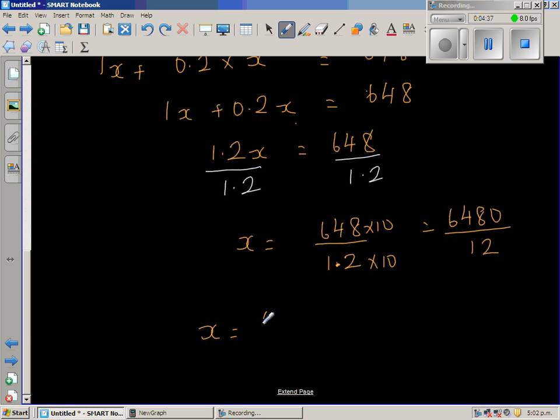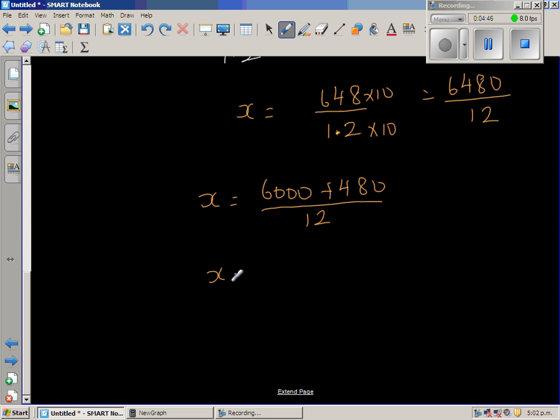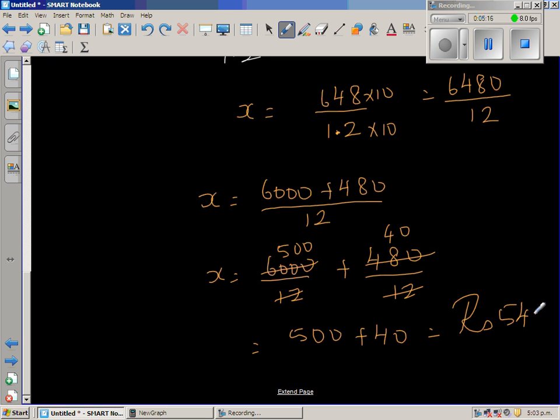So this is 6000 plus 480 divided by 12. Therefore x is 6000 over 12 plus 480 over 12. 12 goes into 60 five times, so that's 500 here. And 12 times 4 is 48, so this is 40. So this is 500 plus 40, which is 540 rupees is the purchase price of the book.